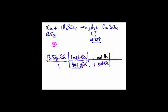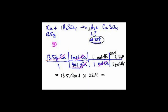Now I'm going to convert to liters at STP. We're again assuming we're at STP. On the bottom, moles of hydrogen; and on top, 22.4 liters. This is the molar volume: any gas will occupy 22.4 liters if you're at STP and there's one mole of gas. So in the calculator, you take 13.5, divide by 40.1, then times it by 22.4. And the answer is...